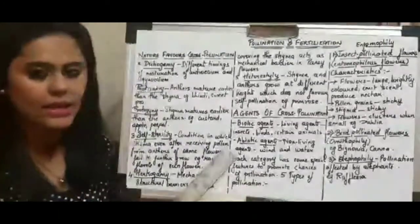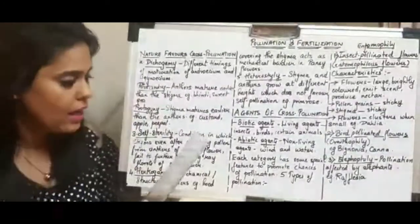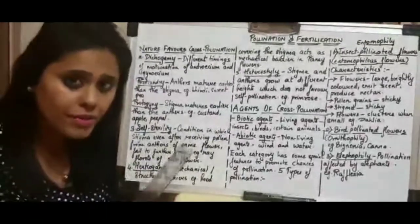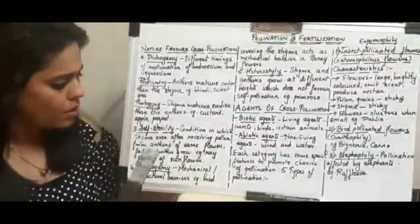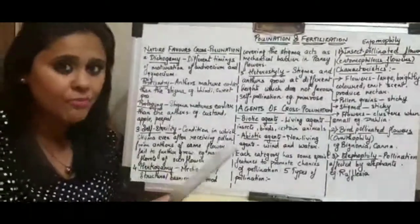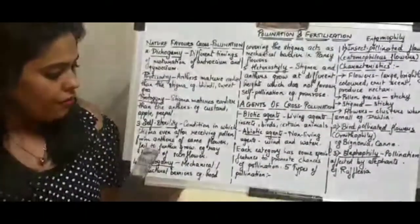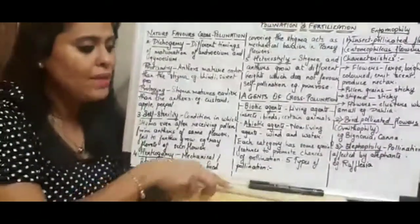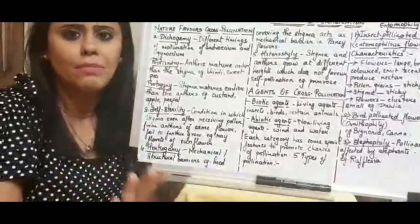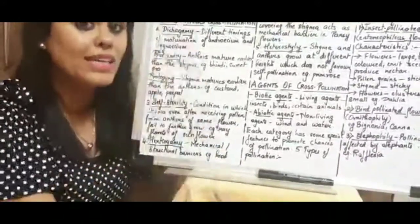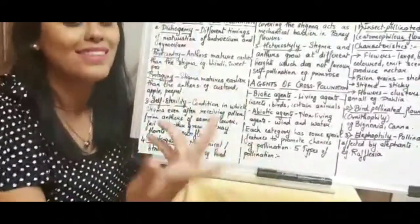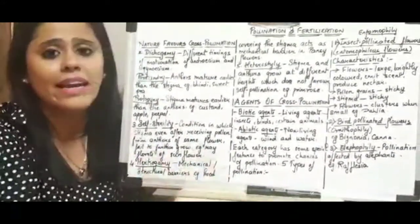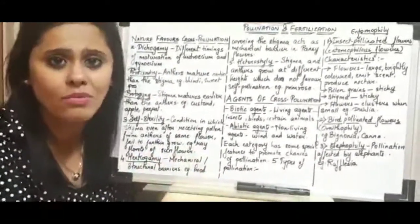Self-sterility is a condition in which the stigma, even after receiving pollen from the anthers of the same flower, fails to allow further growth. The stigma has rejected its own pollen.